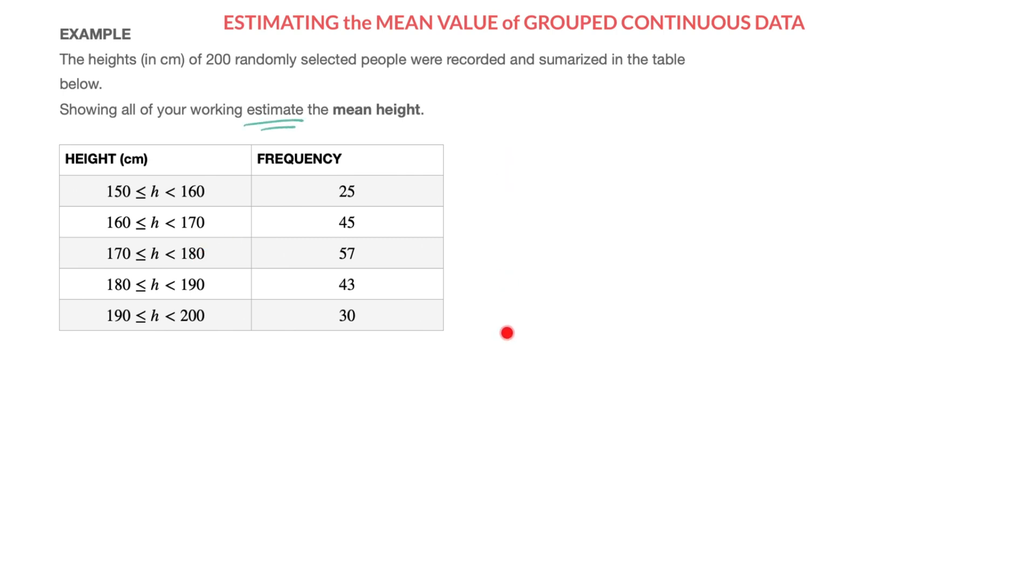In that column we're going to write the mid-value of each of these class intervals. Here's what I mean. I'll go ahead and add a column right here, and at the top of that column I'll name it mid-value.